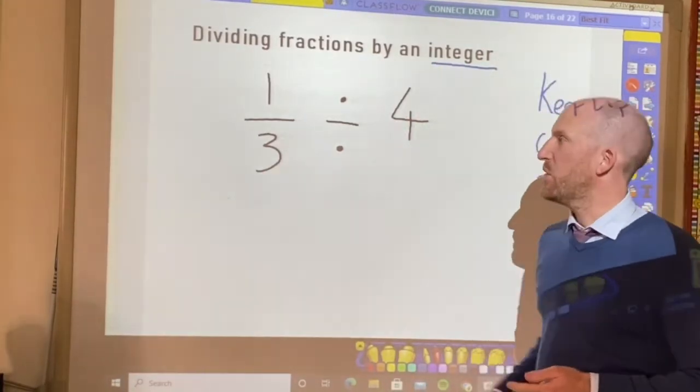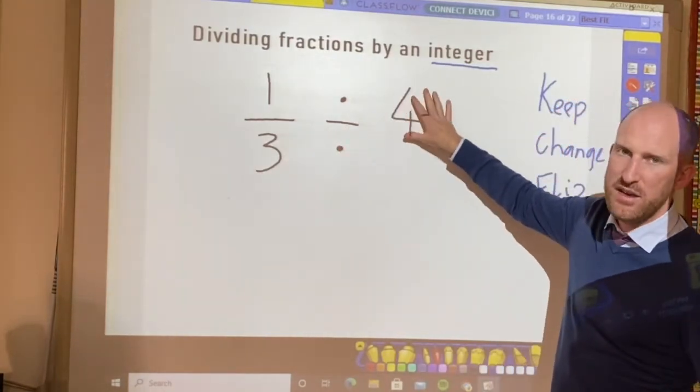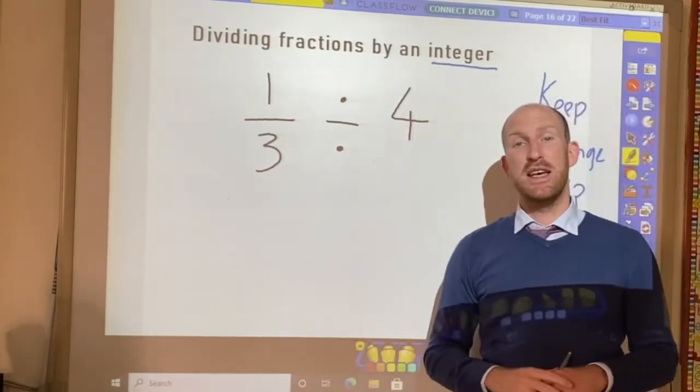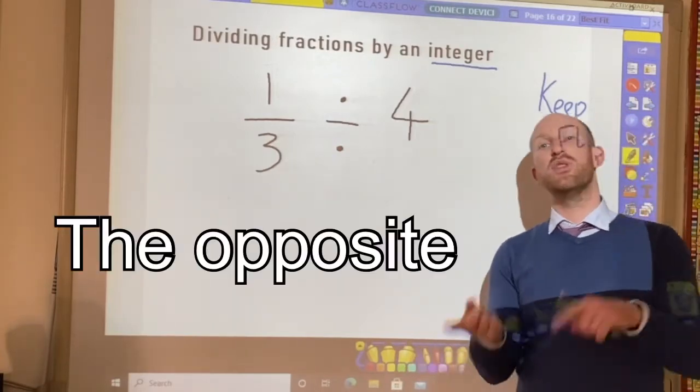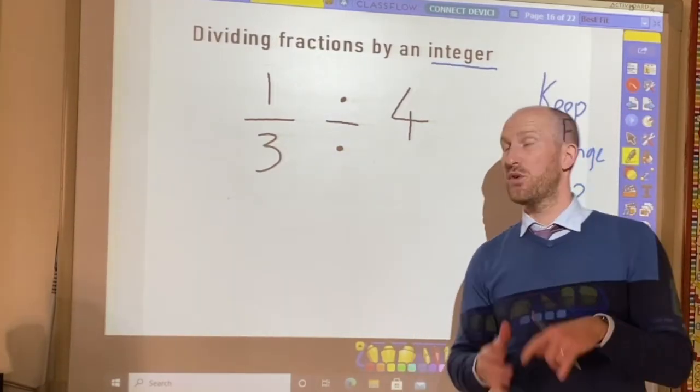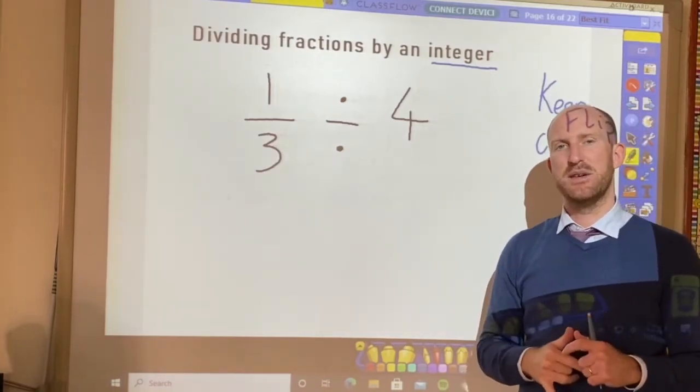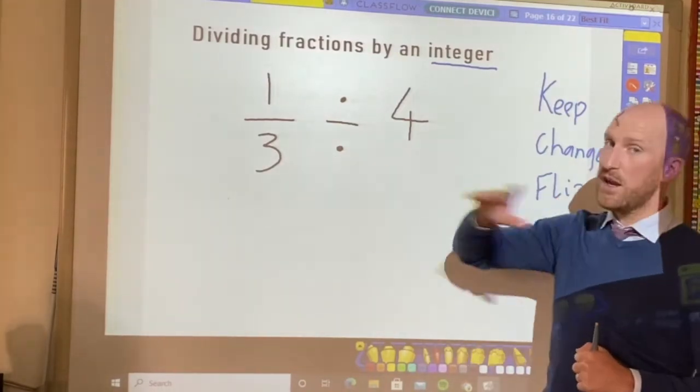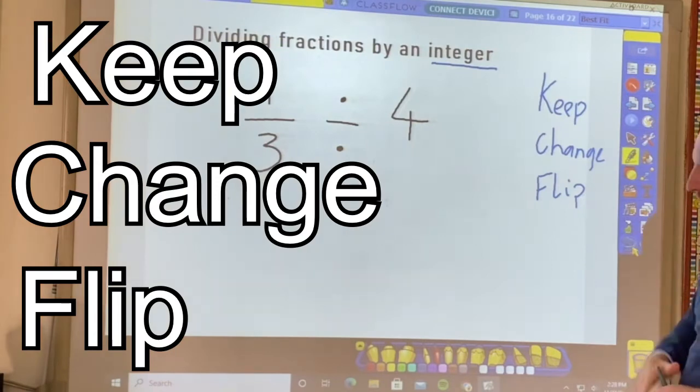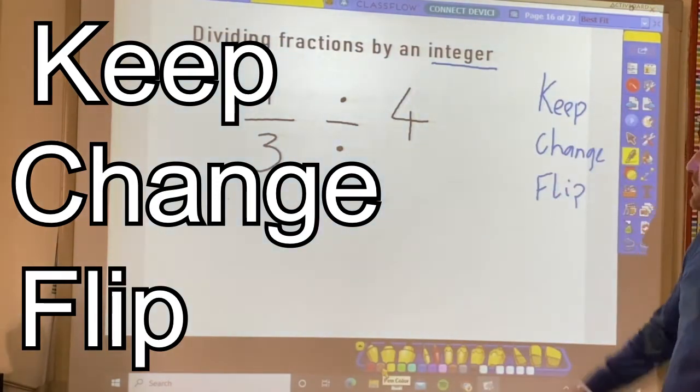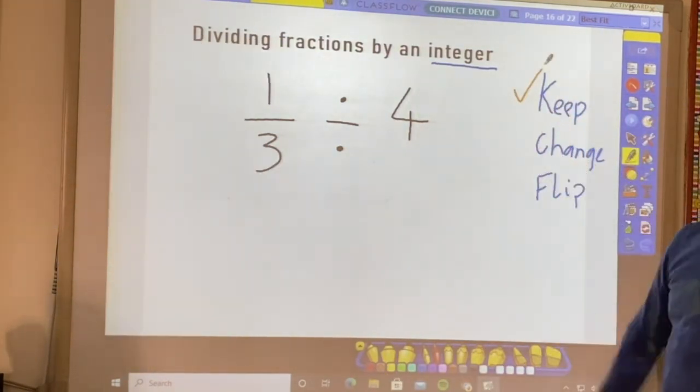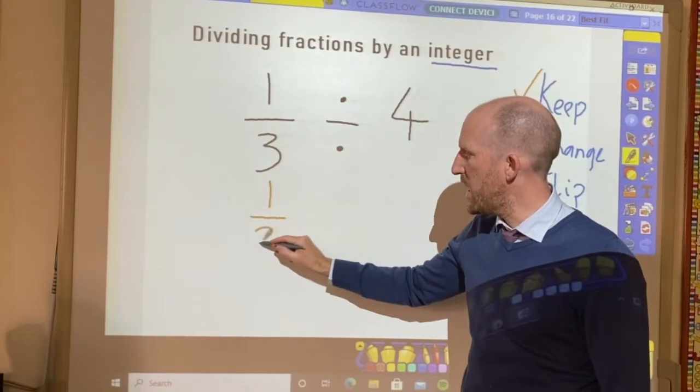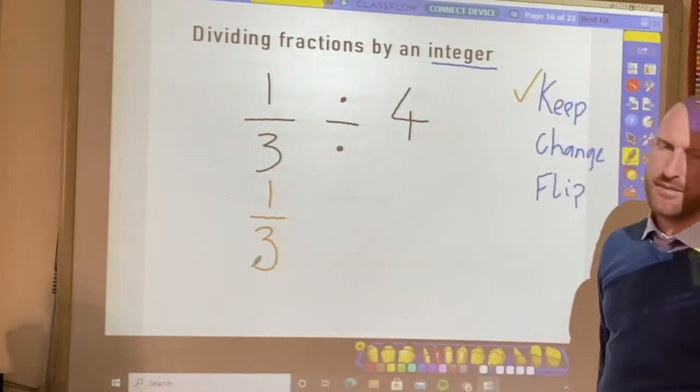In my dividing example here, I have one-third divided by four. Now, the weird thing about dividing by an integer is that we're actually not going to divide it all. We're actually going to do the opposite. Okay? We're going to do the opposite. We're actually going to multiply to find our answer. Okay? So, you may be confused just now. But, the three things that you need to remember when dividing by a fraction is keep, change, flip. Okay? So, watch carefully what I'm going to do. So, keep. What does that mean? Keep means to keep the fraction on the left the same. Do not change it. Keep it. Okay?